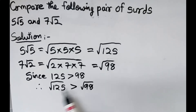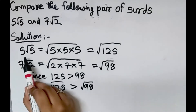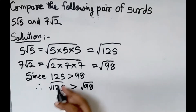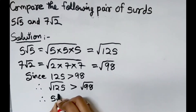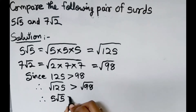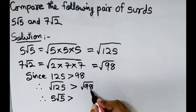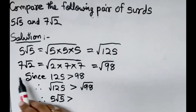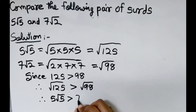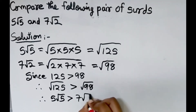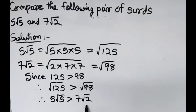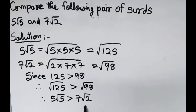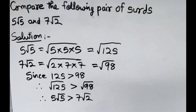Square root of 125 is 5 root 5, and square root of 98 is 7 root 2. Therefore 5 root 5 is greater than 7 root 2. So here we have compared this pair of surds.